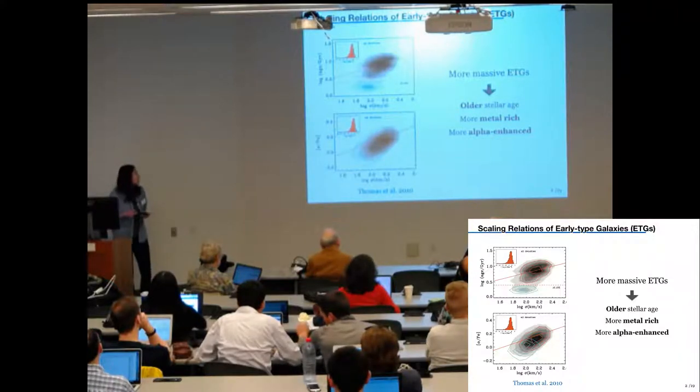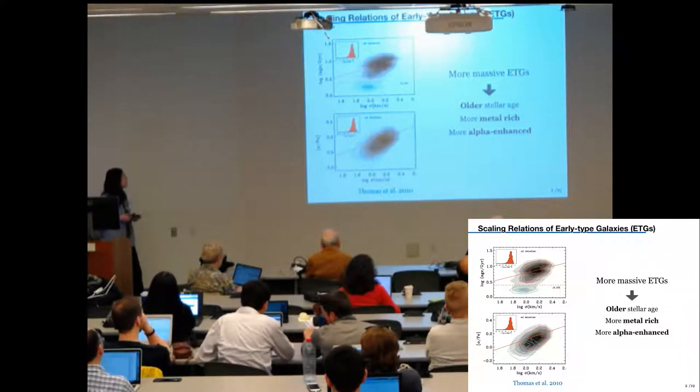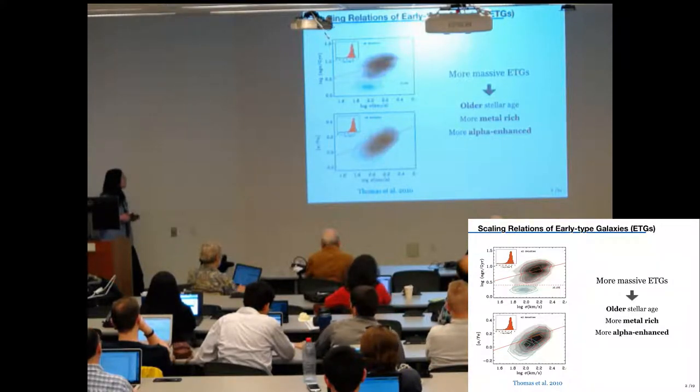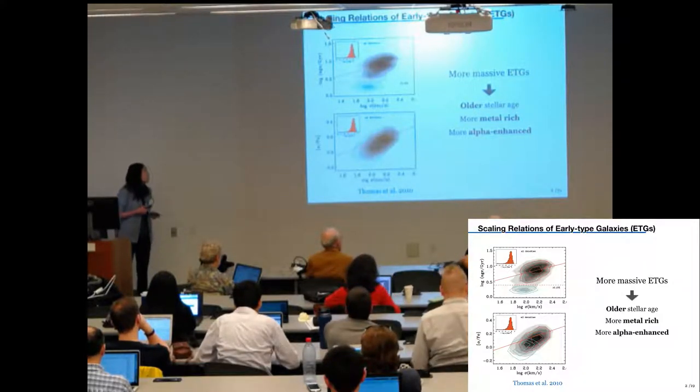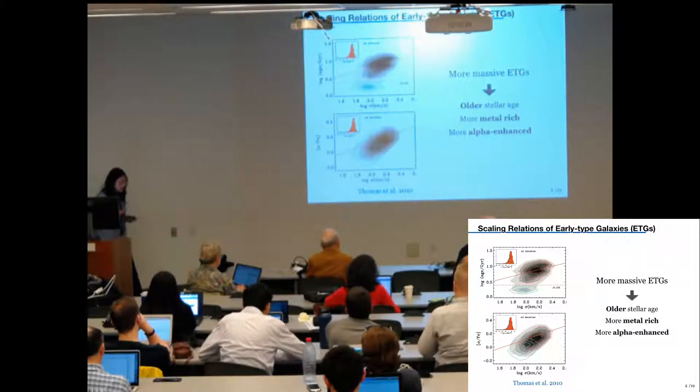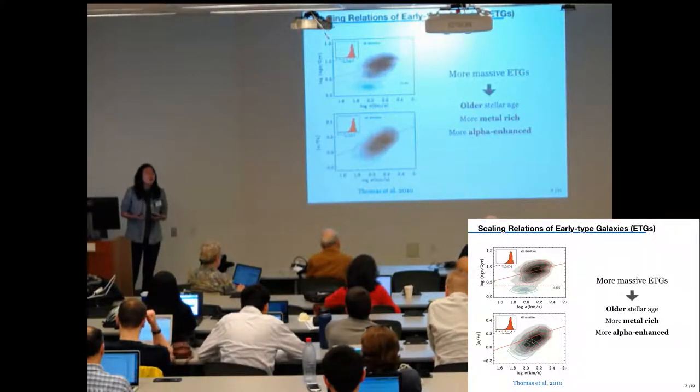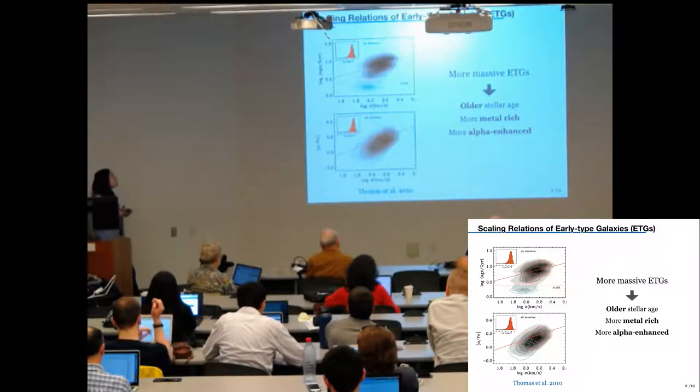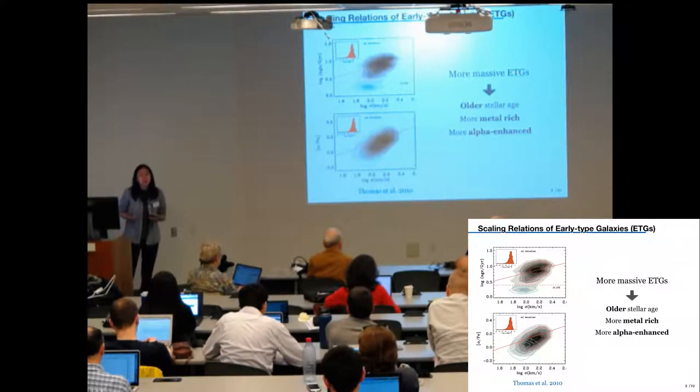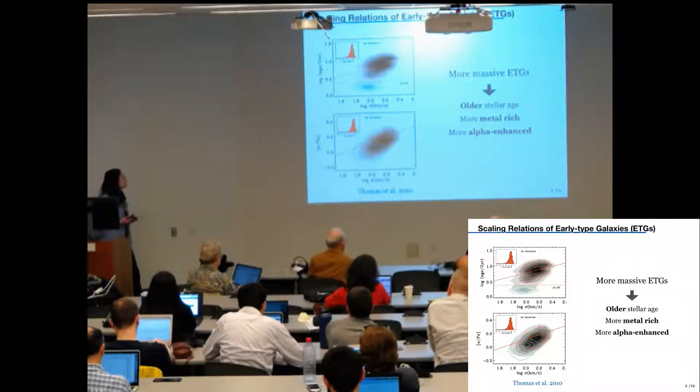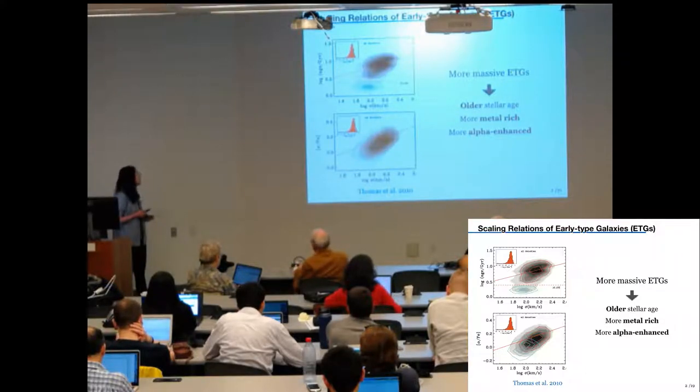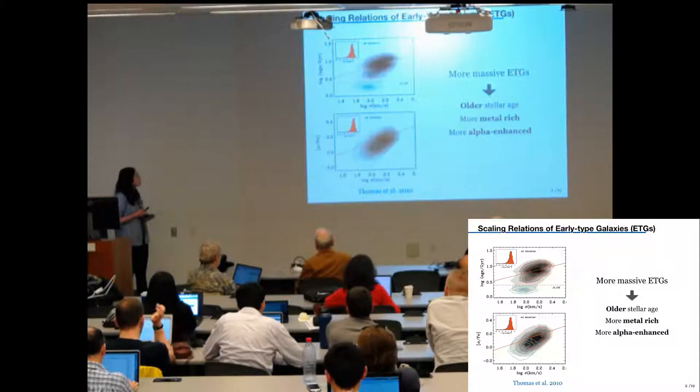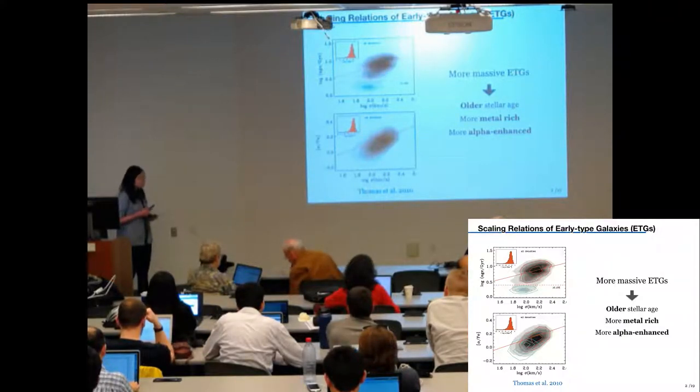So the figure here compares the relation between the light-weighted stellar age or the alpha-to-iron ratio and the central velocity dispersion. Let's focus on the orange contours here, which represents the old red sequence. This and a lot of other observations have found that for early-type galaxies, the more massive galaxies are older, more metal-rich and more alpha-enhanced compared to low-mass galaxies, which means more massive galaxies are formed earlier and in more intense star formation. And the building blocks of more massive galaxies would imprint their stellar population information on the outskirts of massive galaxies.